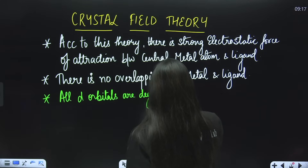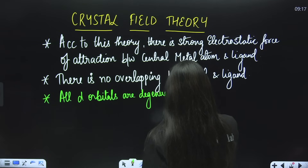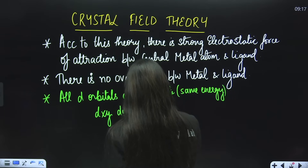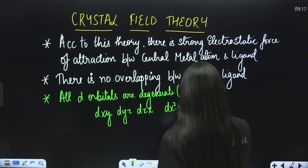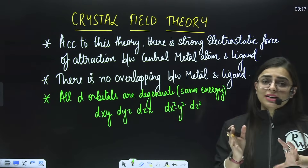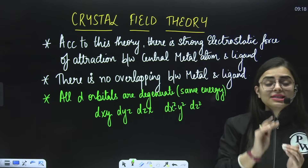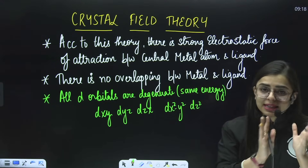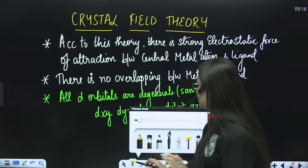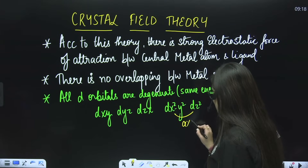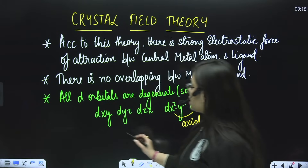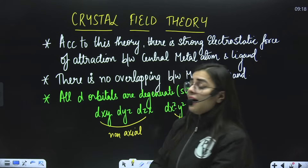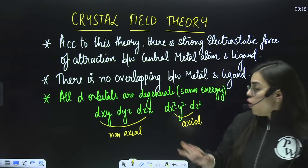The word degenerate means they have the same energy. These five orbitals — dxy, dyz, dzx, dx²y², and dz² — can be classified into two subcategories: axial and non-axial. The axial ones are those whose lobes lie on the axes — dx²y² and dz² are the axial ones. The non-axial ones — dxy, dyz, and dzx — have their lobes in between the axes. All of these have the same energy.